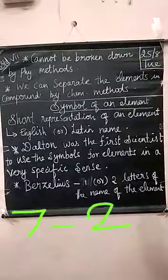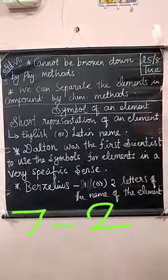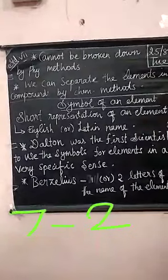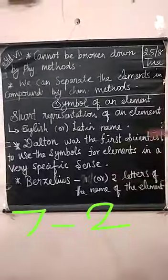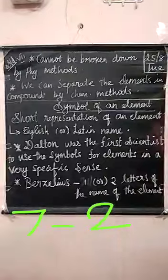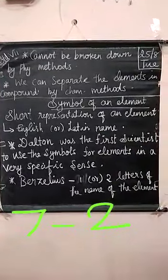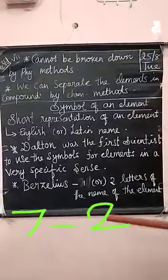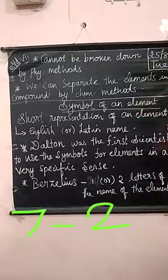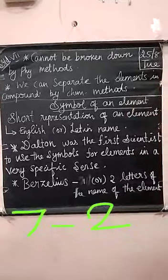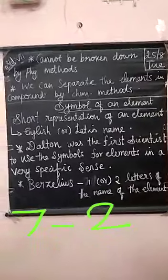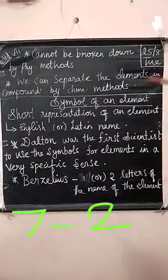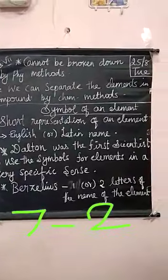The next property is we can't break down a compound by physical methods. If a compound is prepared, we can't break down the elements in that compound by physical methods like filtration. However, we can separate the elements in a compound by chemical methods. For example, sodium chloride is a compound — we can separate sodium and chlorine by chemical methods.